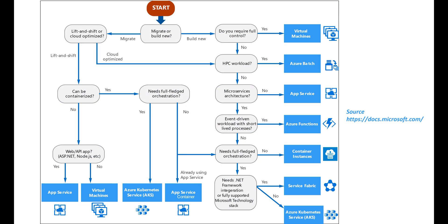I found the following flowchart from MSDN really useful to decide which compute service to use for your solution. For example, let's say we are building a brand new application. The first question we have to ask ourselves is: do we want full control over our development environment? If the answer is yes, then probably a virtual machine is our best bet. With a virtual machine, we have complete control — we can install any software, middleware components, runtimes, and even our own custom operating system image. This flowchart is really useful to decide which compute service to use for your application.